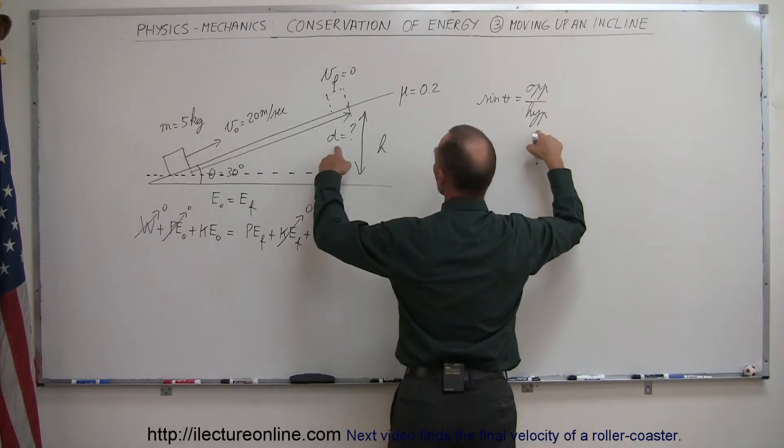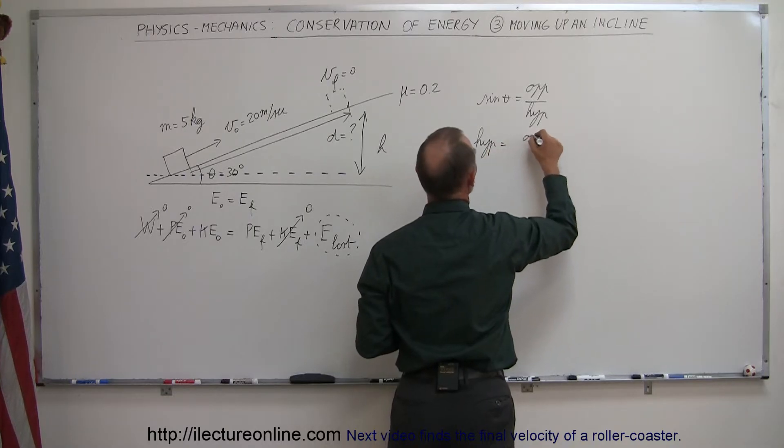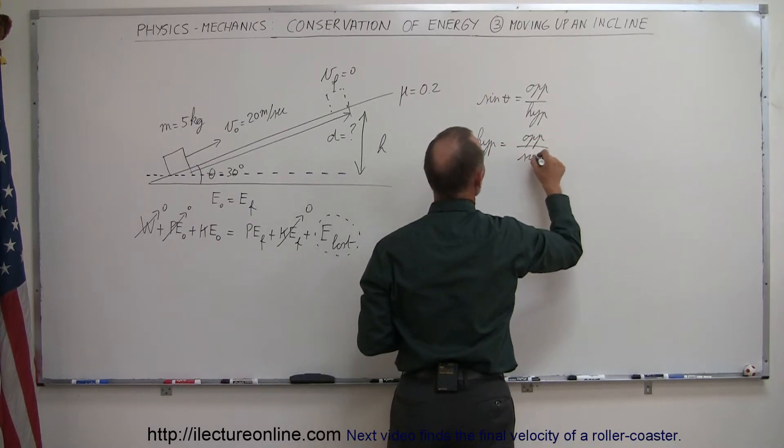And since we're looking for the hypotenuse D, we can say the hypotenuse is equal to the opposite side over the sine of theta.